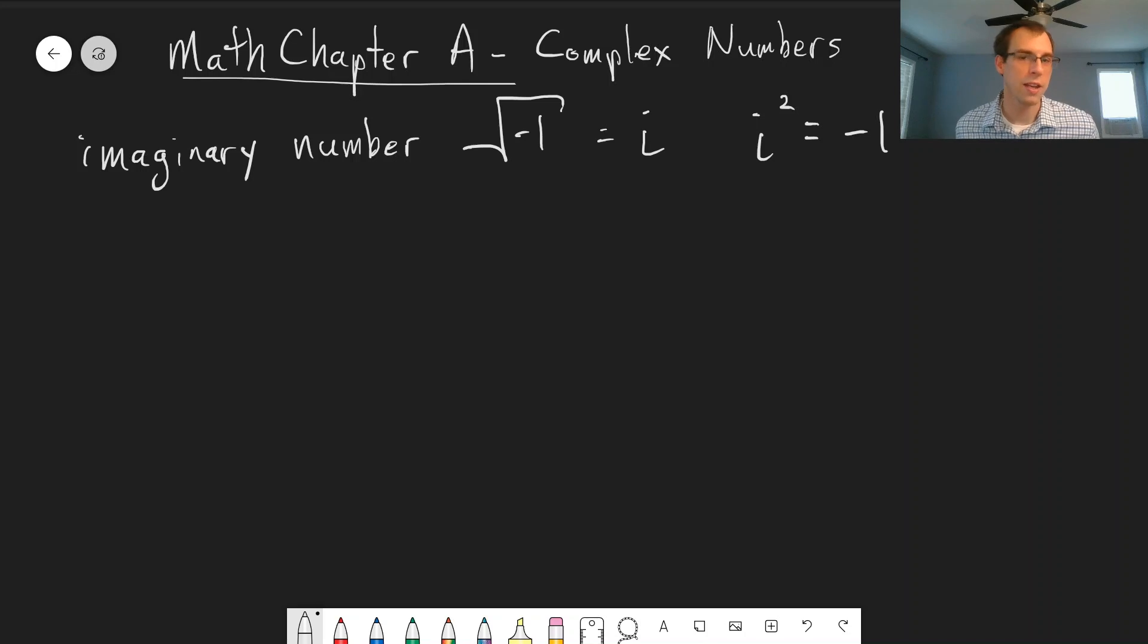Because if we square a negative number we get a positive number, if we square a positive number we get a positive number. Complex numbers contain both real numbers, what we refer to as regular positive or negative numbers, and imaginary parts. So a complex number contains both real and imaginary parts.